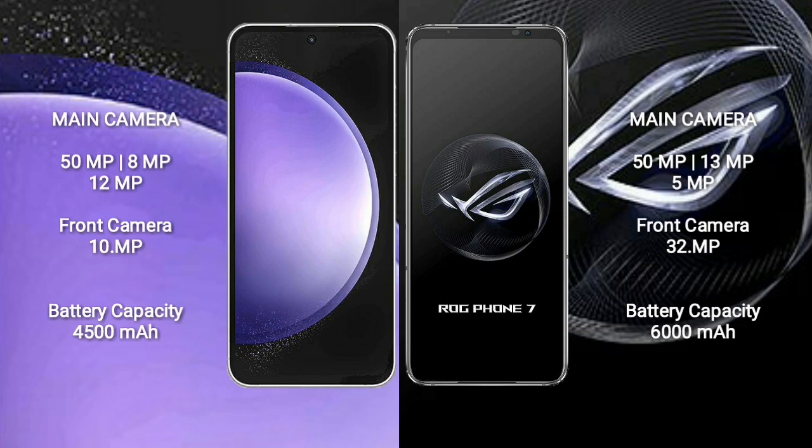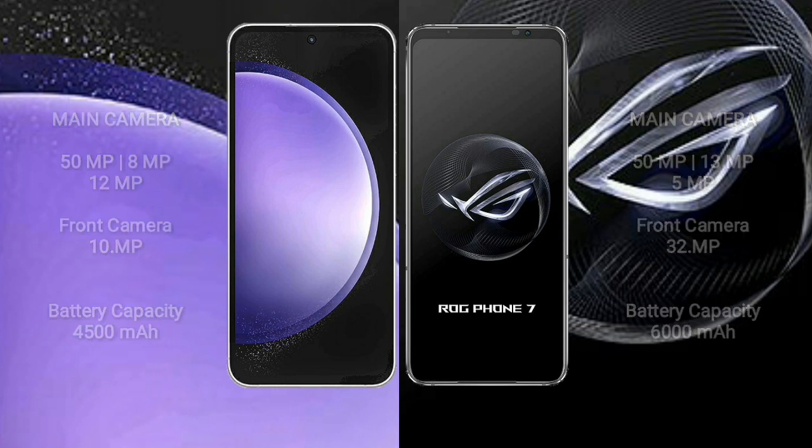Asus ROG Phone 7 features a rear triple camera setup: 50MP, 13MP, and 5MP, with a 32MP front camera. Samsung Galaxy S23 FE has a 4,500mAh battery with 25W fast charging support. Asus ROG Phone 7 has a 6,000mAh battery with 65W fast charging support.